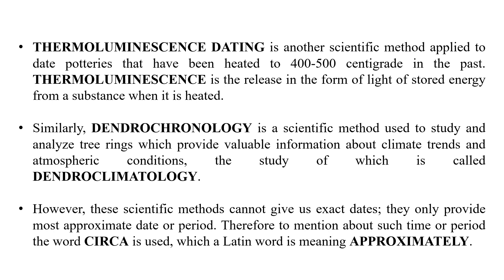Thermoluminescence dating is another scientific method applied to date materials that have been heated to 400 to 500 degrees centigrade in the past. Thermoluminescence is the release of stored energy in the form of light from a substance when it is heated. Similarly, dendrochronology is a scientific method used to study and analyze tree rings, which provide valuable information about climate trends and atmospheric conditions. However, these scientific methods cannot give us exact dates — they only provide the most approximate date or period. Therefore, to mention such time or period, the word circa is used, which is a Latin word meaning approximately.